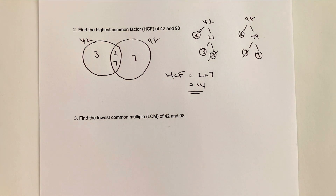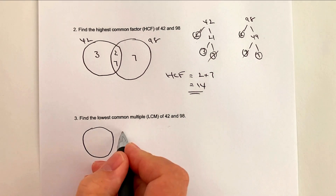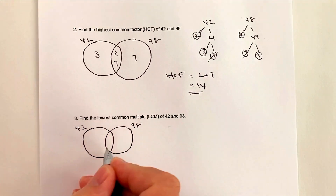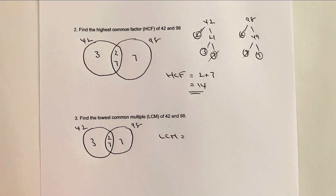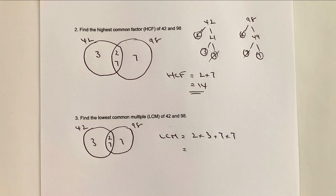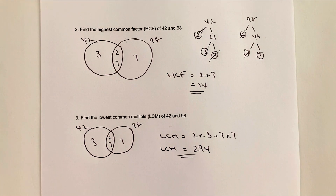The big advantage of this Venn diagram approach is that we can also work out the lowest common multiple straight away. The LCM is all of the numbers multiplied together. Writing them in ascending order: 2 × 3 × 7 × 7 = 294. These are typically non-calculator questions, but the LCM of 42 and 98 is 294.